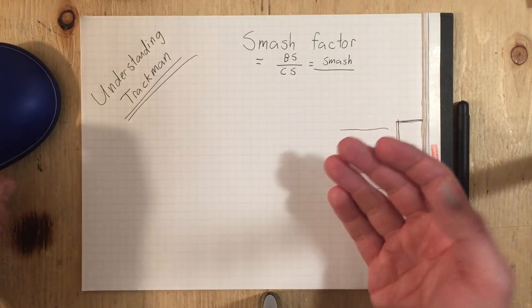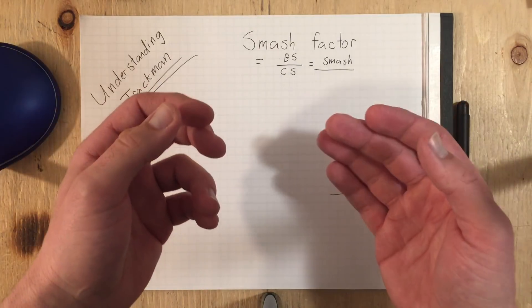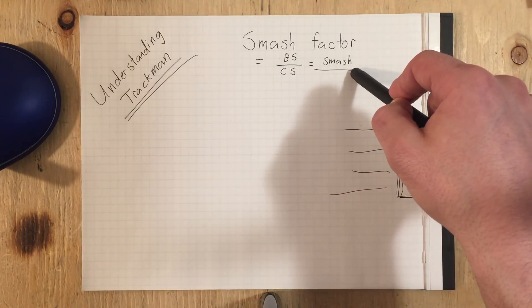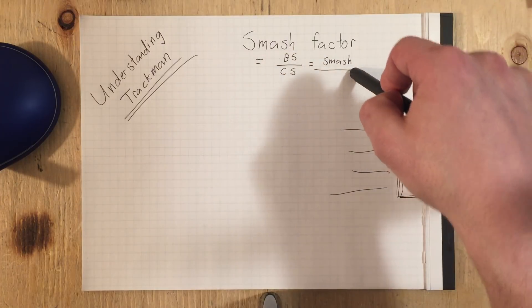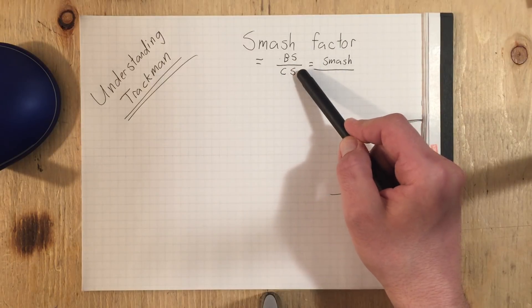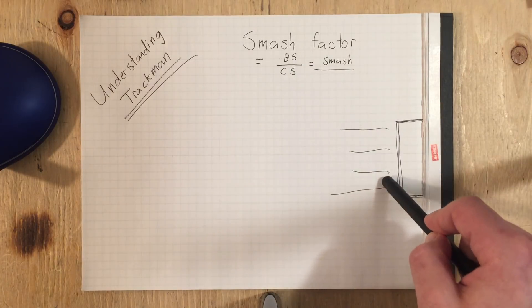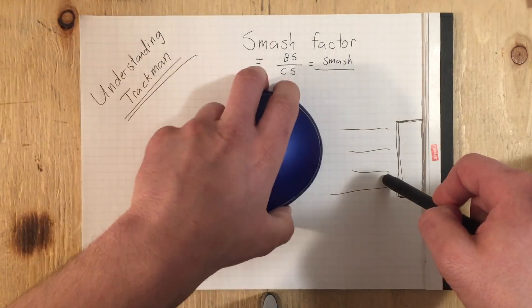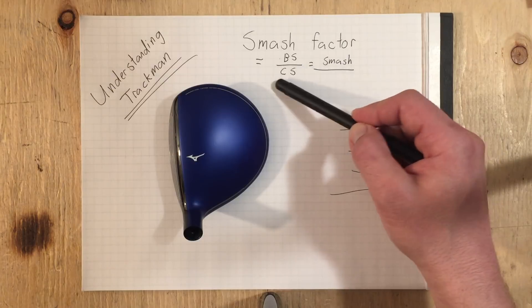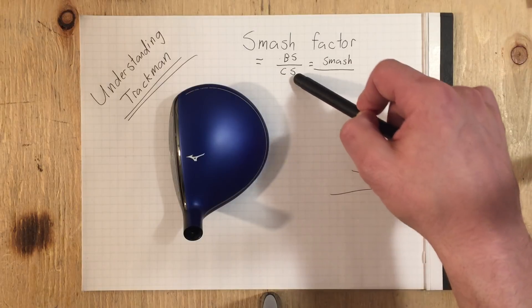For someone like Tiger, this is where they're getting the highest clubhead speeds on tour — say 128 miles an hour — but his smash factor is super low. His smash factor is a lot lower than an average guy hitting a driver, which doesn't make sense for a golfer of his caliber. So is it misreading ball speed or misreading clubhead speed? It's not that it's misreading, it's how it's measuring — most likely clubhead speed is giving a slightly inflated number.